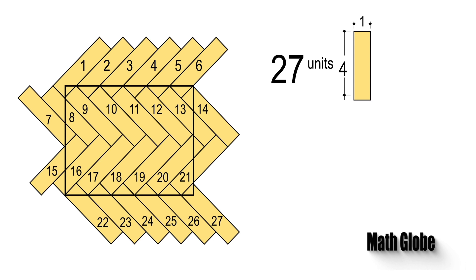From this, we can write the total area of the shape like 27 times 4 times 1 equals 108 units.